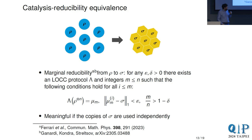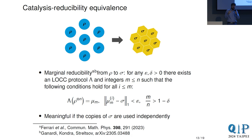This setting is still meaningful if you think of sigma being used by different parties independently — if each subsystem is given to a different set of parties who never interact across these cuts, then the correlations don't matter operationally, and the problem is a meaningful one to study.